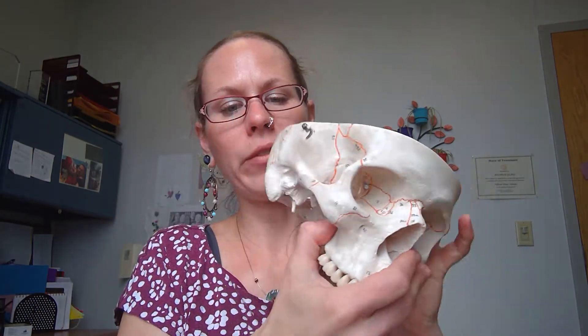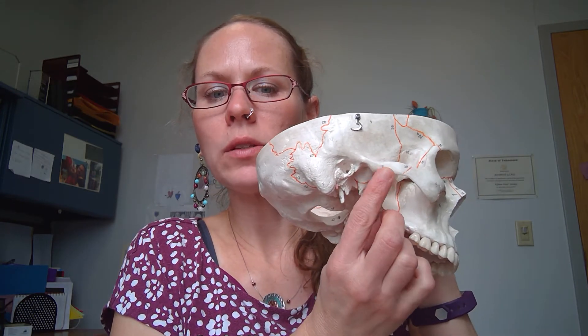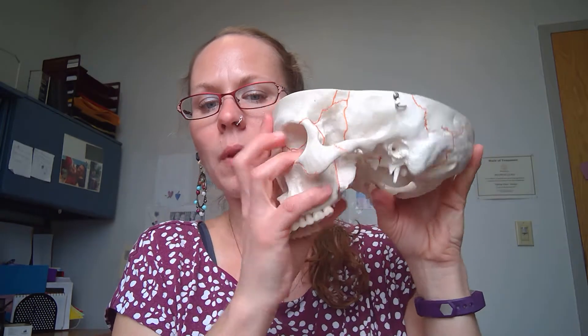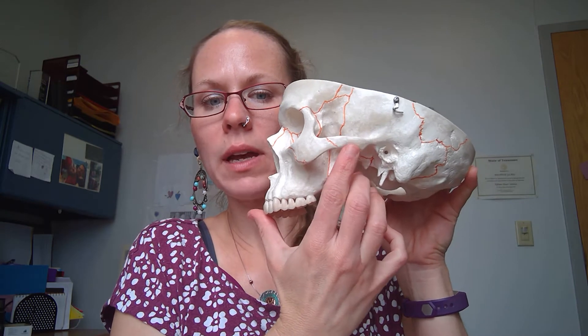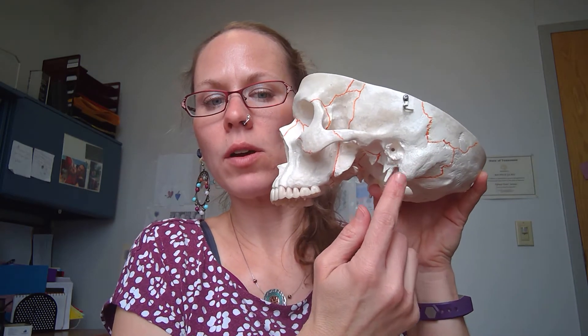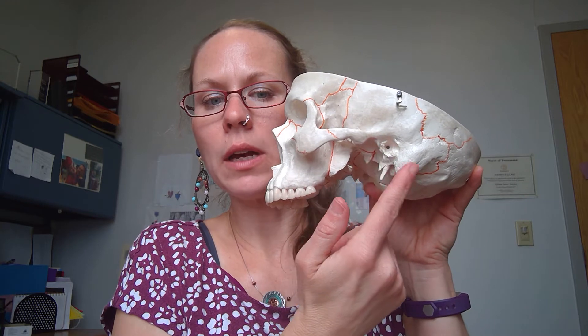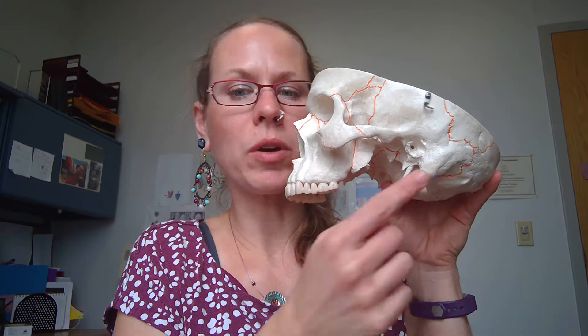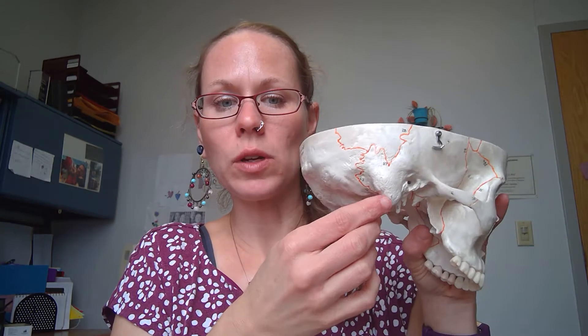We have three holes and three processes. This process here is part of the temporal bone called the zygomatic process. We have this large bump here — it's behind the external auditory canal — this is called the mastoid process, and you can feel that if you feel behind your ear. Processes are extensions of bone where a bone articulates with another bone or where you have important muscle or ligament attachments.